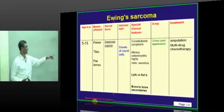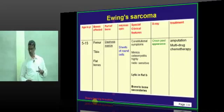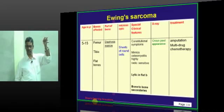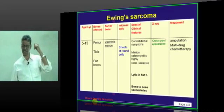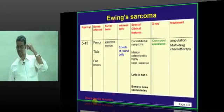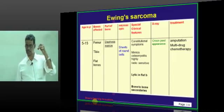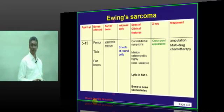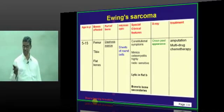So: lytic in flat bones; bone-to-bone secondaries; occurs in children; mimics osteomyelitis; constitutional symptoms; onion peel appearance of new bone in the diaphysis area; lytic in flat bones — all these are typical characters of Ewing sarcoma.